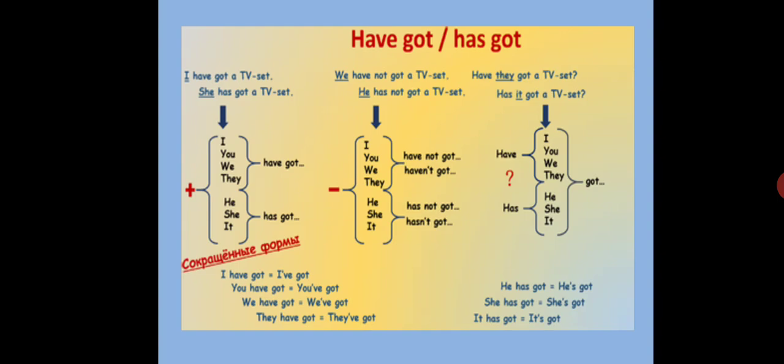In plural form, we have not got a TV set. In the third person negative sentence, he has not got a TV set. In question form, have they got a TV set? Has it got a TV set?